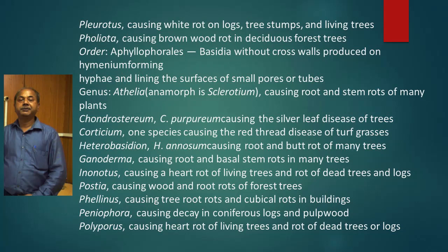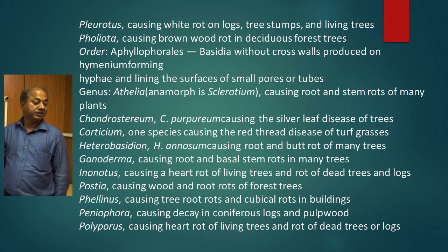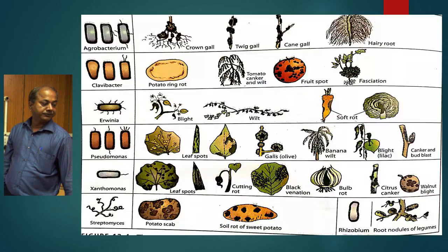You all know about the mushroom genera — Pleurotus, then Agaricus. Pleurotus causes white rot on logs, tree stumps, and living trees, and it also causes disease. Under Aphyllophorales, the basidia are without cross walls and produced on a hymenium lining the surface of small pores or tubes. Under this, the genera are Athelia — causing root and stem rot of many plants — then Chondrostereum, then Corticium, then Ganoderma, then Postia, then Peniophora, then Polyporus.